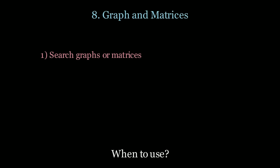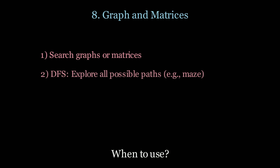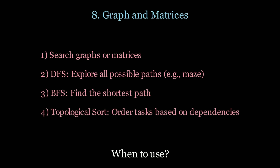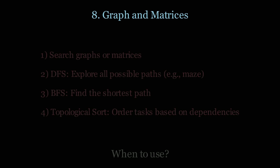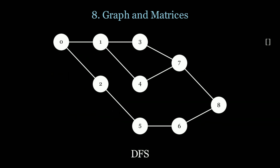Next up we have graphs and matrices. Use this pattern when you want to search graphs or matrices, when you want to explore all possible paths with DFS, use BFS to find the shortest path distance, and use topological sort if you need to order tasks based on dependencies. Let's see how this looks, starting with DFS.